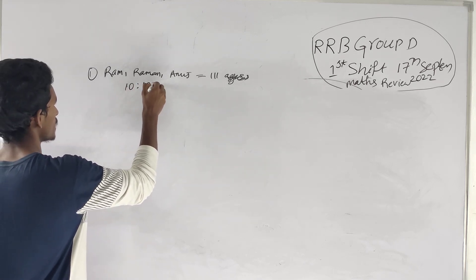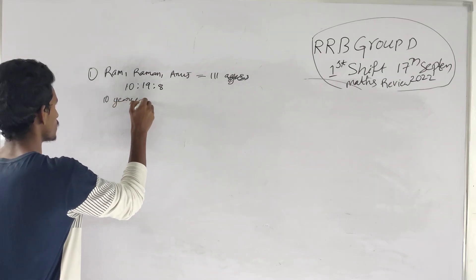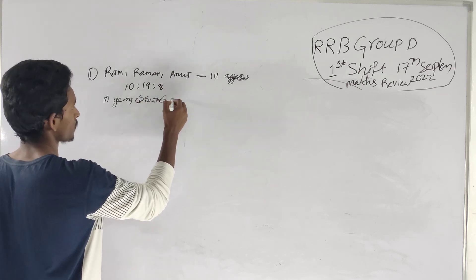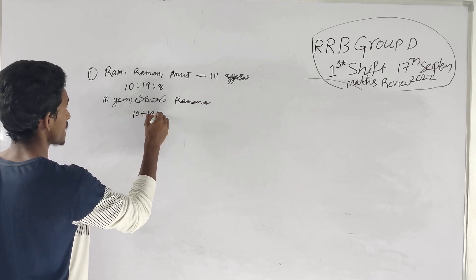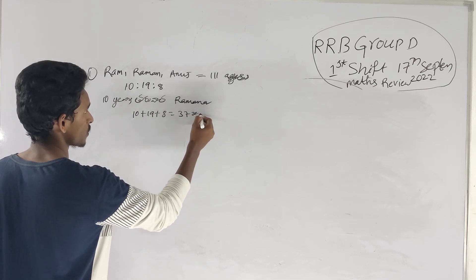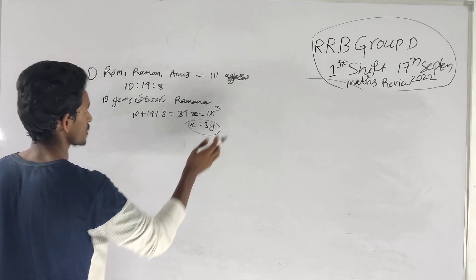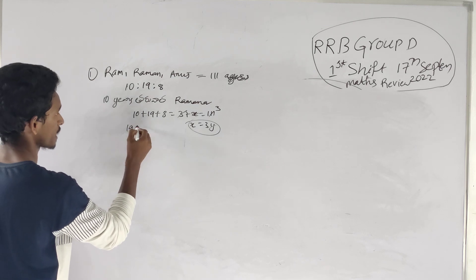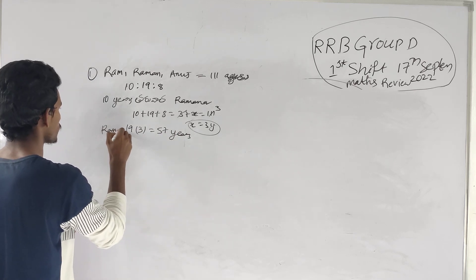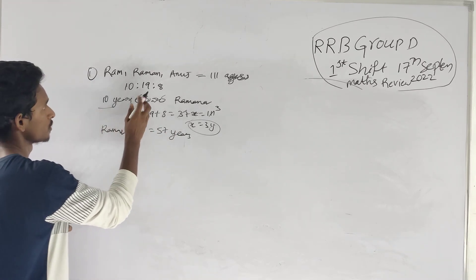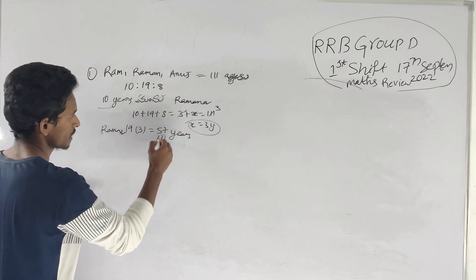The ratio is 10 is to 19 is to 8. We calculate: 37x is equal to 111, so x is equal to 3. The present age value: 57 is equal to 57.